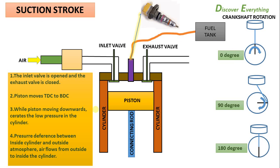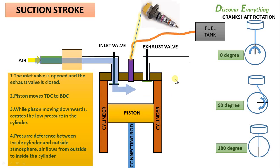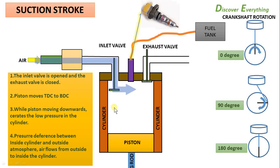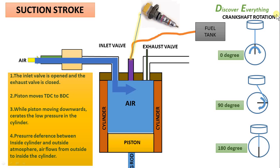First is the suction stroke. In the suction stroke, the inlet valve is open. The piston moves from top dead center to bottom dead center. As the piston moves down, the cylinder fills with air. The crankshaft completes 180 degrees of rotation — that is, half a revolution — to complete the suction stroke.